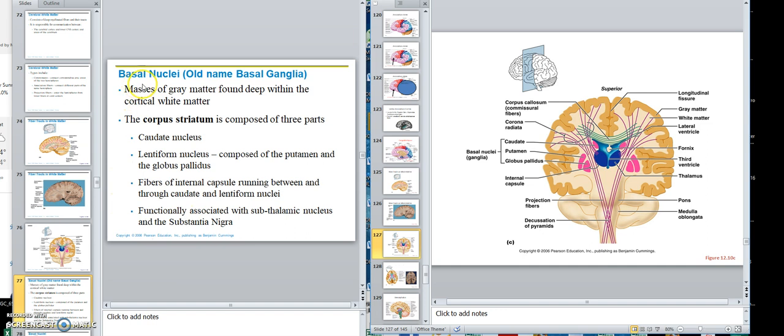Okay, let's go. So this is called the basal nuclei, old name basal ganglia.